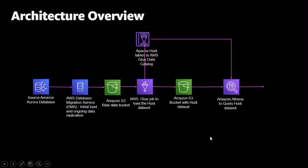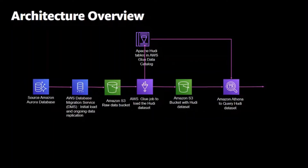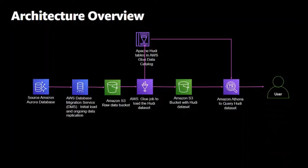In this demo, I will show you how to replicate data from a relational database. In my case, I have set up an Amazon Aurora database. I will use Apache Hudi to manage inserts, updates, and deletes to your S3 data lake. I will use AWS Glue to upsert data in the data lake using Hudi as an embedded library. And finally, we will take advantage of the serverless architecture of Amazon Athena to query the Hudi dataset in our data lake. So let's get started.